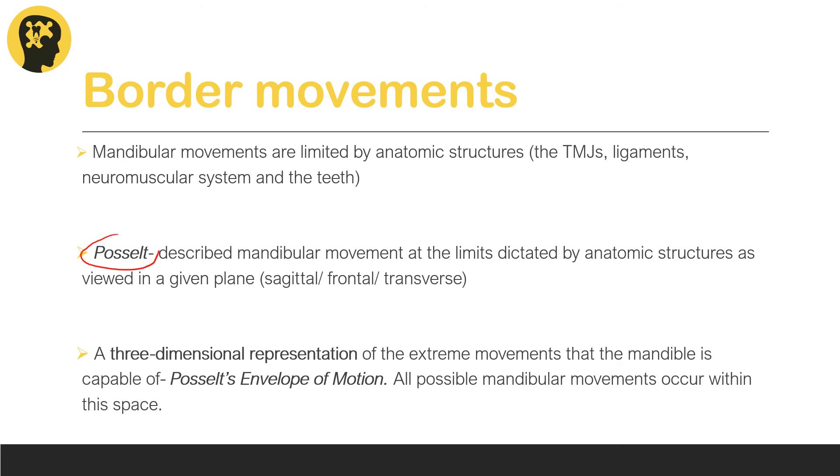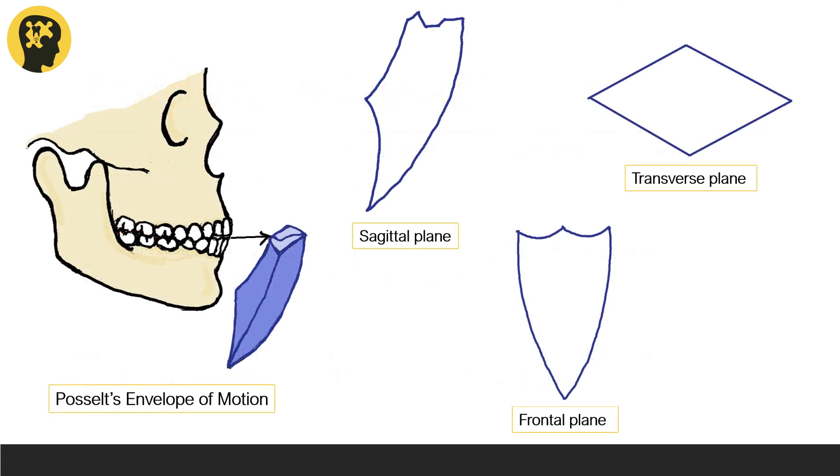Dr. Posselt traced the border movements on the three planes: the sagittal, frontal, and transverse planes. He traced the border movements of the mandible from the side on the sagittal plane, from the top on the transverse plane, and from the front on the frontal plane.